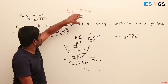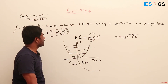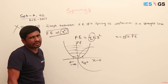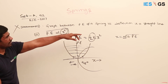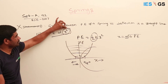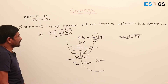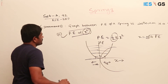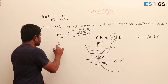Conversely, if the deflection vs. PE graph were a straight line, then PE would be proportional to X (not X squared). Since Statement 2 is correct — PE is proportional to X² — Statement 1 must be wrong. The answer is B.